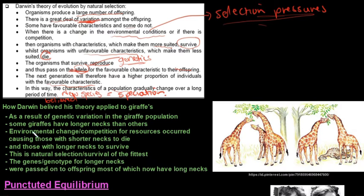As a result of genetic variation in the giraffes, so there was variation. Some had long necks, some had medium necks, and then the others had short necks. So some giraffes had longer necks than others. The environmental change or competition for resources, in this case it was the leaves of trees that were a bit higher, causing those with shorter necks to die because they could not get food.